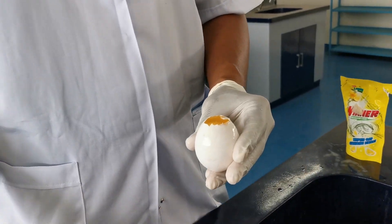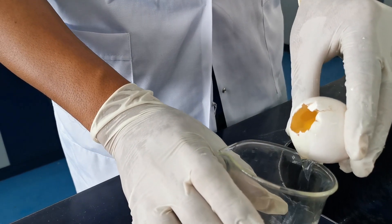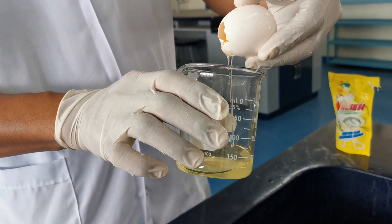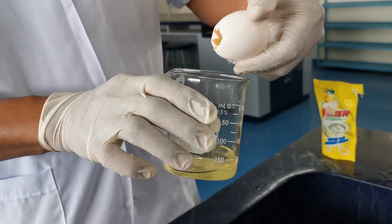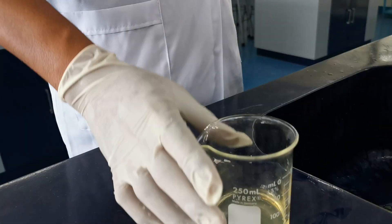Before we proceed with the different tests for proteins, we need to prepare the albumin solution. The albumin solution is prepared by beating egg white in five volumes of water. So we need to separate the egg white from the egg yolk.